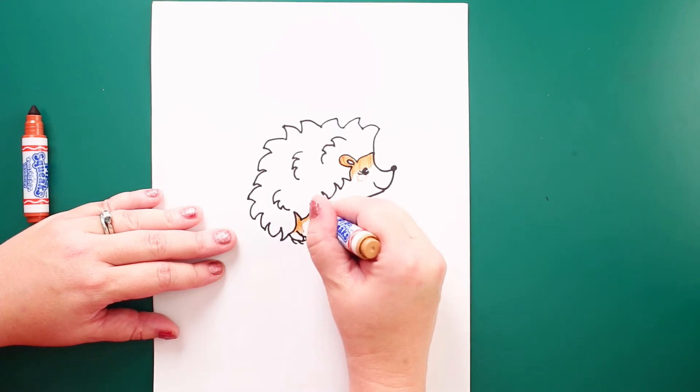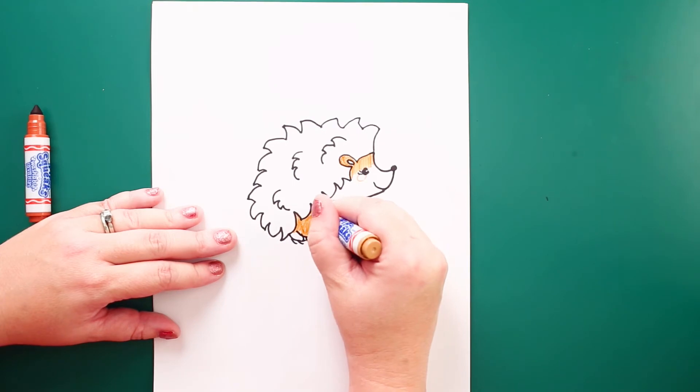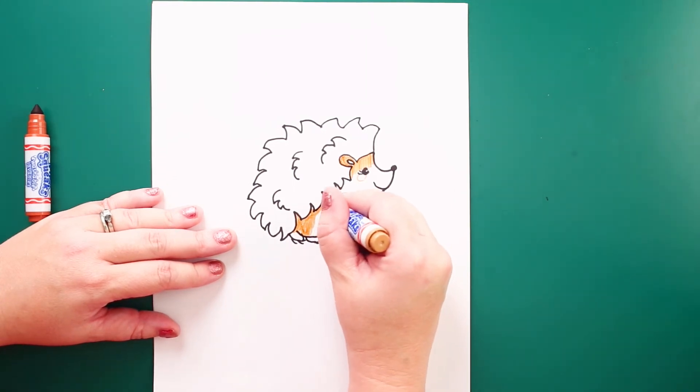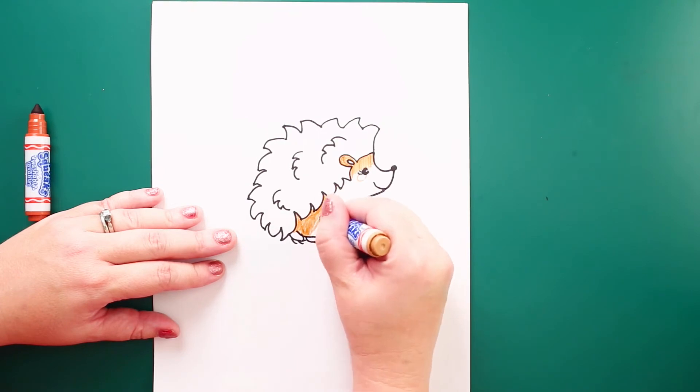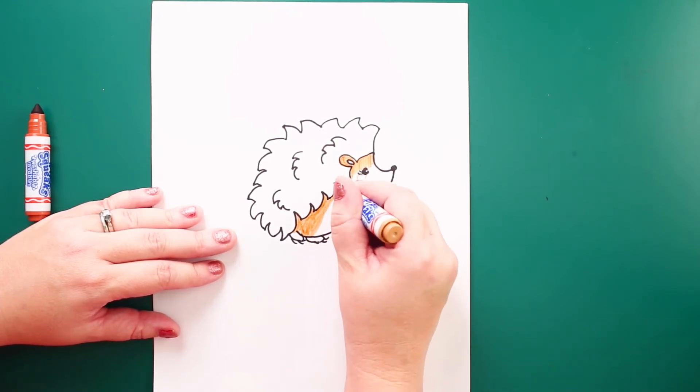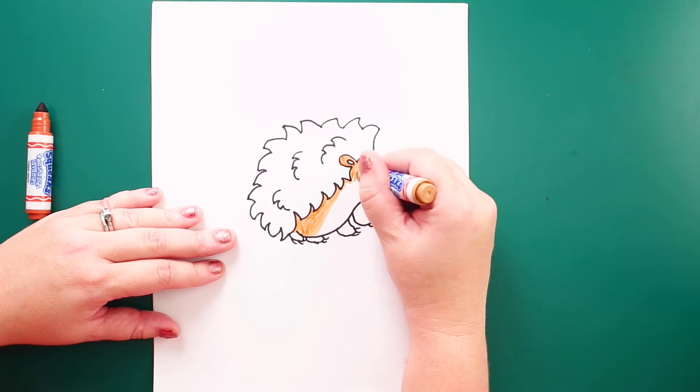Now hedgehogs are pretty cool in the fact that they eat like anything, not anything, but they eat lots of tiny little things: bugs, tons of different insects, fruit, little animals, birds, frogs, almost anything, little mice.